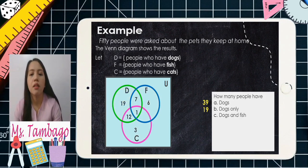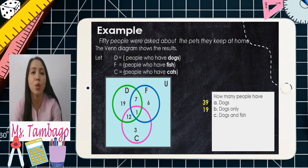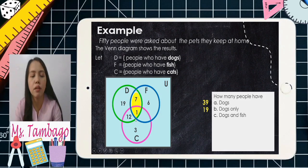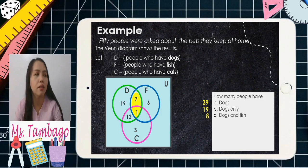Letter C: dogs and fish. We have the conjunction 'and,' which refers to the intersection — the overlapping part of dogs and fish. Looking at the shaded region where the green and blue circles overlap, if we add those values, we get 8. So there are 8 people who have both dogs and fish.